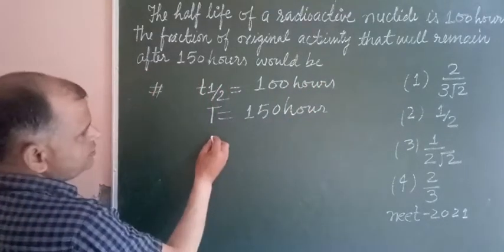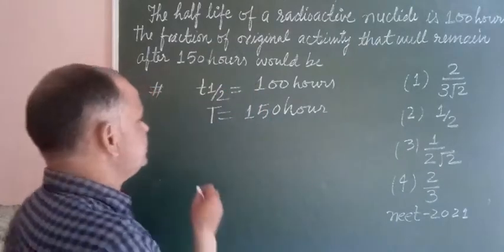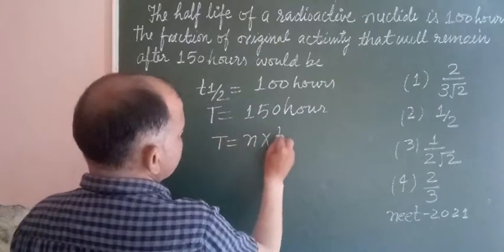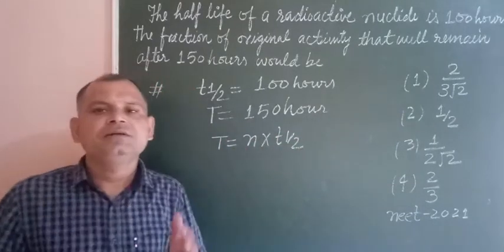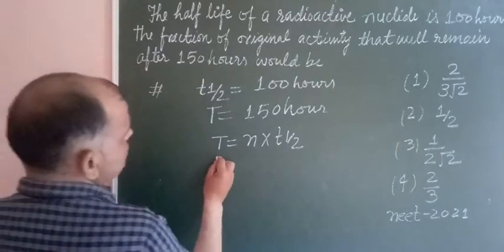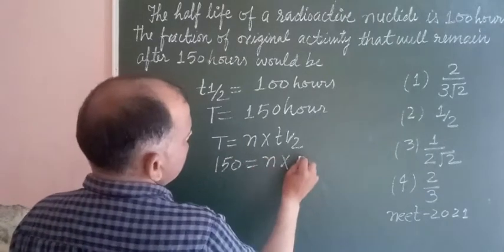The relation between T1/2 and T is T = N × T1/2, where N is the number of half-lives. So we put here 150 = N × 100.